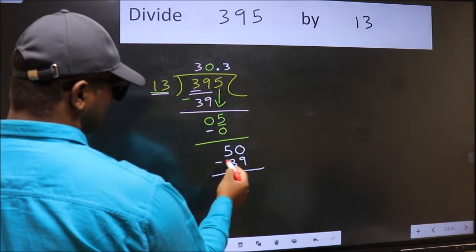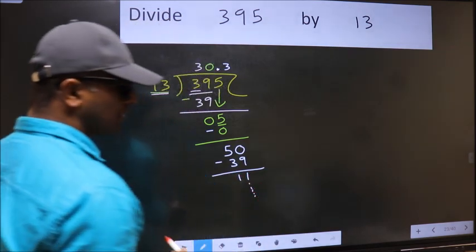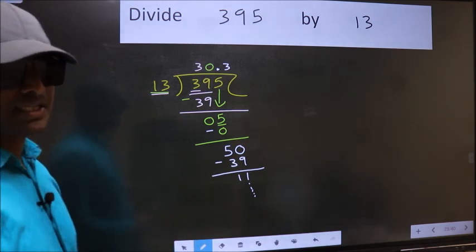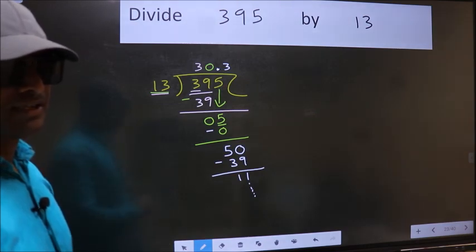Now we subtract and get 11. You can continue the division; I am not doing that. Did you understand where the mistake happens? You should not make that mistake. Okay.